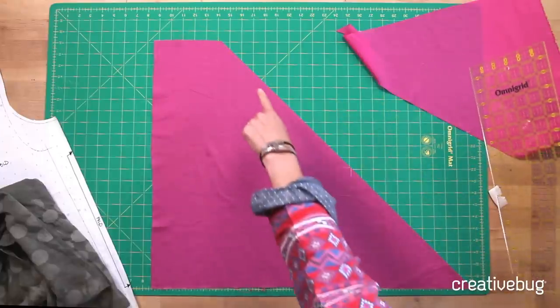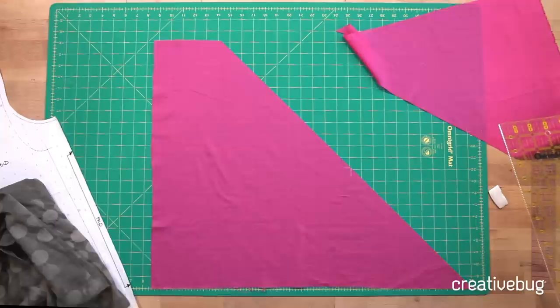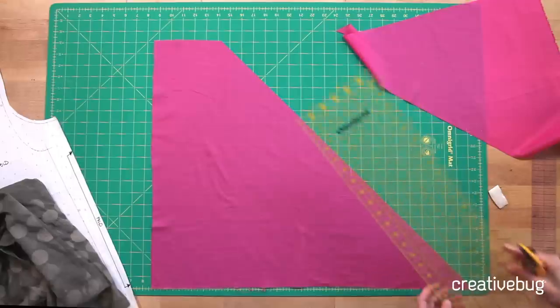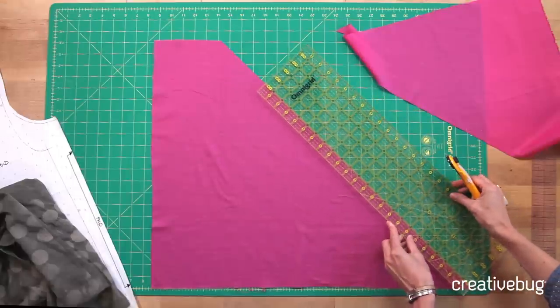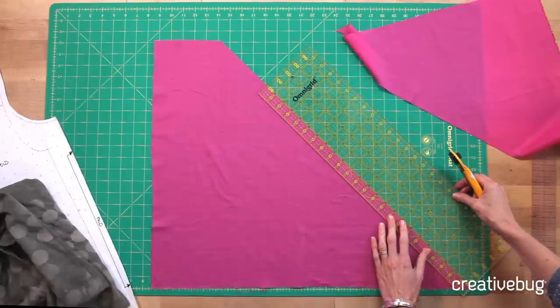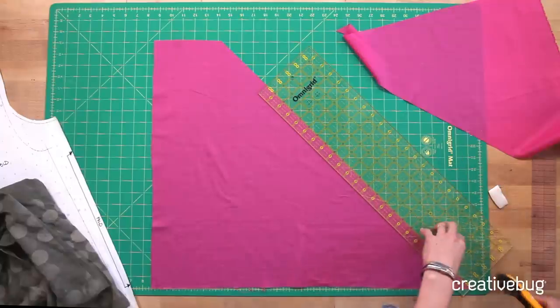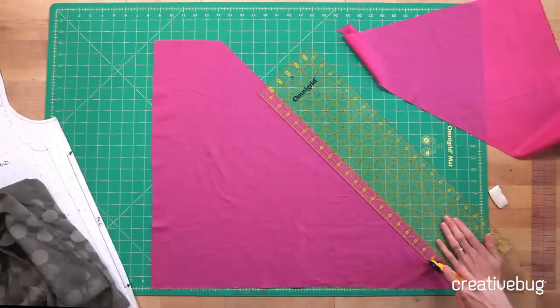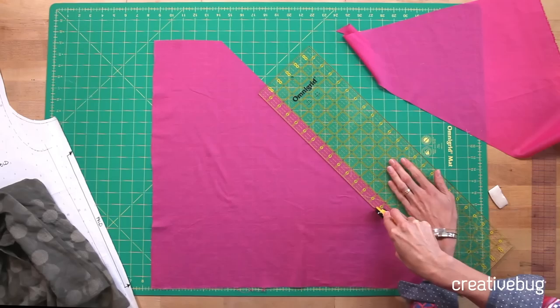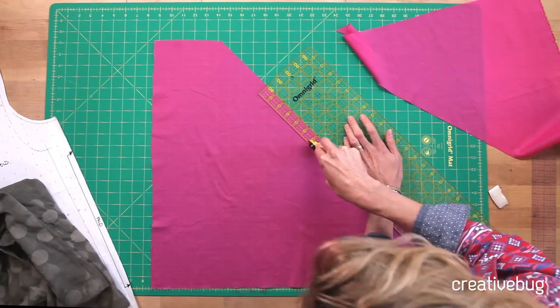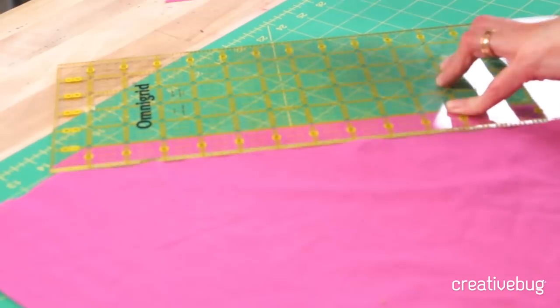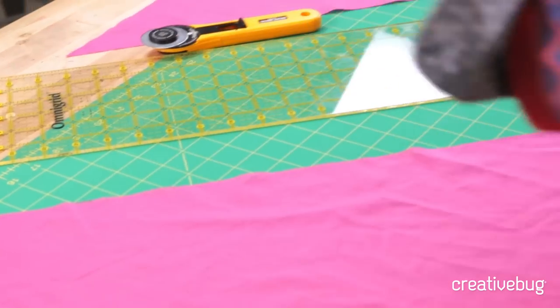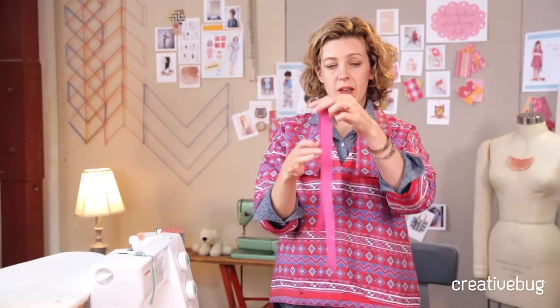So there's my bias edge. I've got a nice 45-degree angle. Now I'm going to cut my bias strip to be one inch wide. So I'll position the ruler again, one inch from my cut edge, and then I'm going to cut it a second time to make a one-inch wide strip. And now we have the bias strip that we're going to use for the facing.